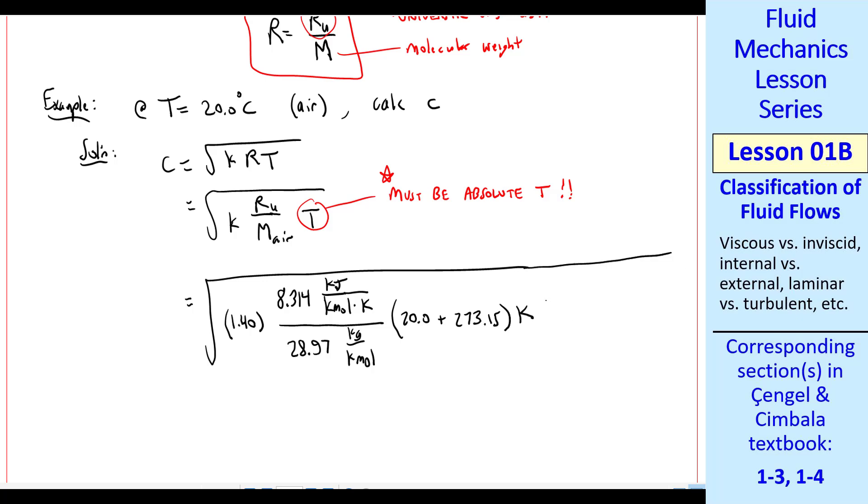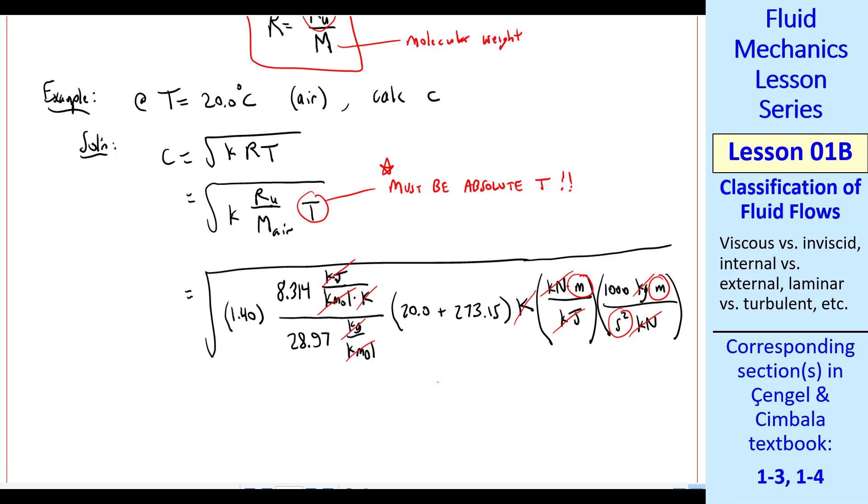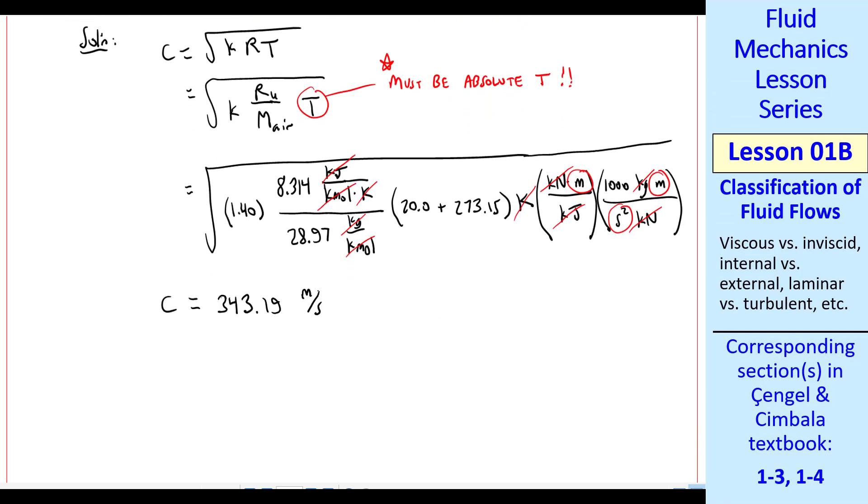Now we need to do some unit conversions. A kilonewton meter is the definition of a kilojoule. That's energy, force times distance. That gets rid of kilojoules there. Kelvins are gone, kilomoles are gone. Now we have kilonewtons and kilograms and meters. So we need another unity conversion factor, 1,000 kilogram meter per second squared per kilonewton. That just comes from Newton's second law. Newton is a kilogram meter per second squared. So a kilonewton is 1,000 kilogram meters per second squared. We can cross out kilonewton. Now we can cross out kilogram. So all we have left is meter squared on the top and second squared on the bottom. When you take the square root, that gives us meters per second, which is what we want. Plug in your calculator. C is 343.19 meters per second. I always give my answers, unless specified otherwise, to three significant digits. But I'll keep these five here for use in the next example problem to avoid roundoff error.